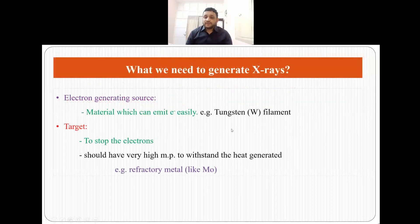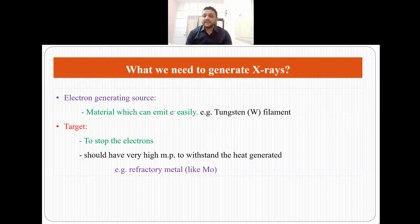To generate x-rays we need two things. First is an electron generating source, which is made up of material that can emit electrons easily, like a tungsten filament. Second is the target, which should be able to stop the electrons and must have a very high melting point to withstand the heat generated. That is why the target is made up of a refractory metal like molybdenum.